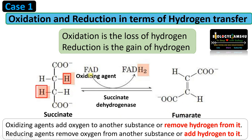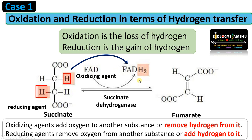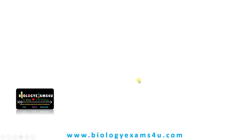The oxidizing agent is the one that removes hydrogen from succinate, or the reactant, whereas succinate is the reducing agent that adds hydrogen to FAD — reducing this oxidizing agent, FAD becomes FADH2. Then one more case with oxidoreductases.